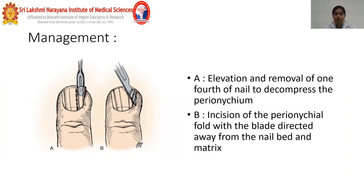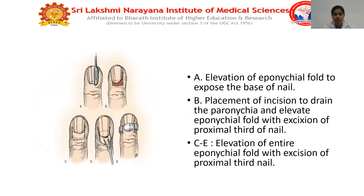Management of acute paronychia includes elevation and removal of one-fourth of the nail to decompress the perionychium. Incision of the epinychial fold with the tip of the blade directed away from the nail bed and matrix. Picture A shows elevation of one-fourth of the nail; B shows incision of the epinychial fold. Multiple pictures demonstrate elevation of the epinychial fold to expose the nail base, placement of incision to drain the perionychium, and excision of the proximal third of the nail.